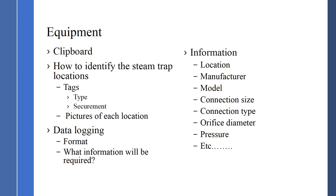Required information fields include location, manufacturer, model number, connection size, connection type, internal orifice diameter, operating pressure, downstream pressure, the type of condensate return system the steam trap discharges into, and how to evaluate inlet pressure for the steam trap if it's on a modulating system. The SOP goes into depth telling team members how to gather each piece of information accurately.